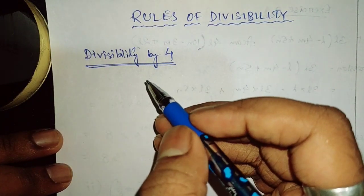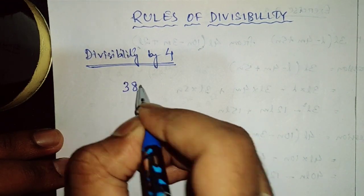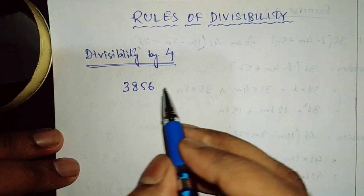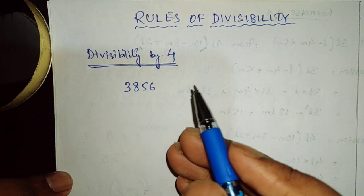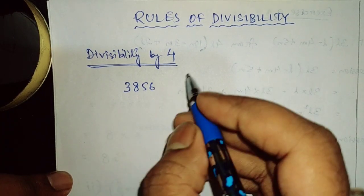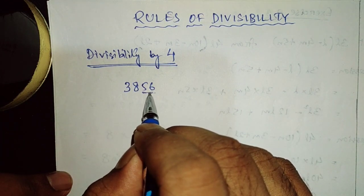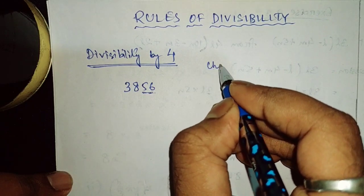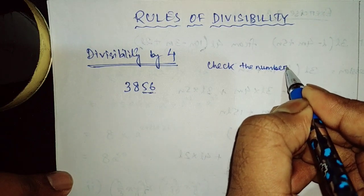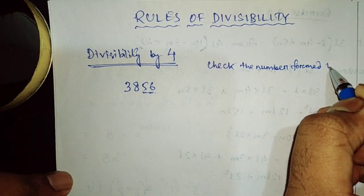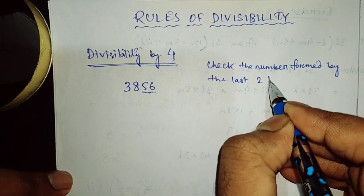When a number is given, suppose 3856, and we have to find out whether this number is divisible by 4 or not, then what we have to do is check the number formed by the last two digits. That is the rule: check the number formed by the last two digits.